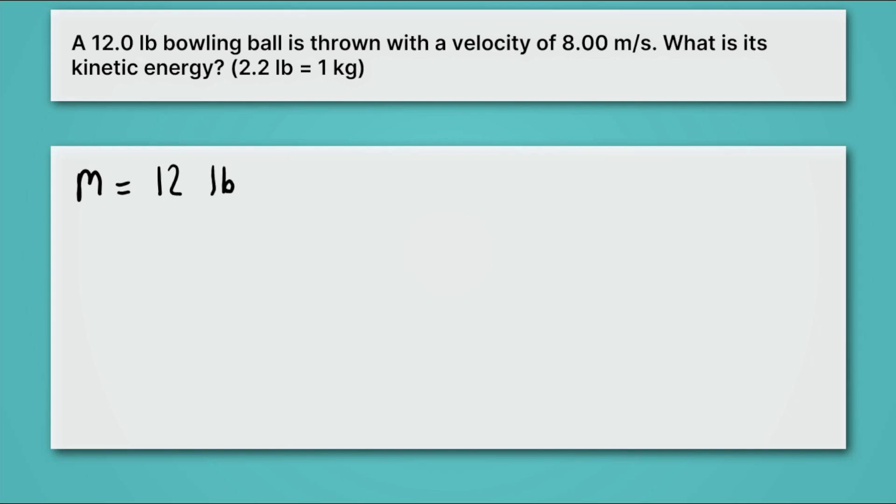Okay, then we've also been given the velocity, and there we know the velocity is 8 meters per second. Okay, great. We want to solve for the kinetic energy. And the kinetic energy, we know, is equal to one half mass times velocity squared.